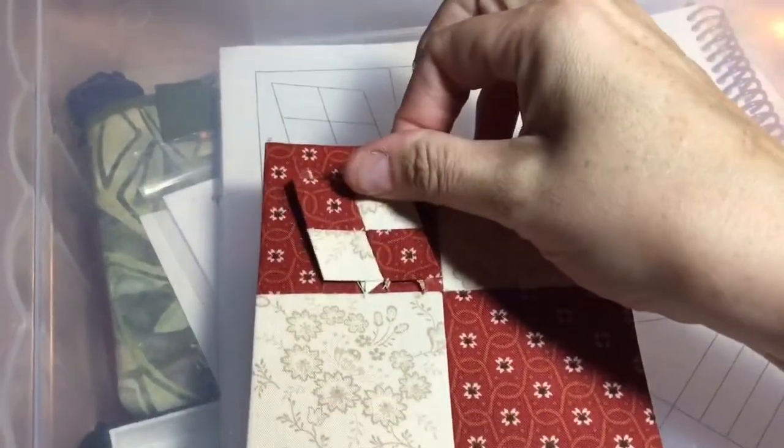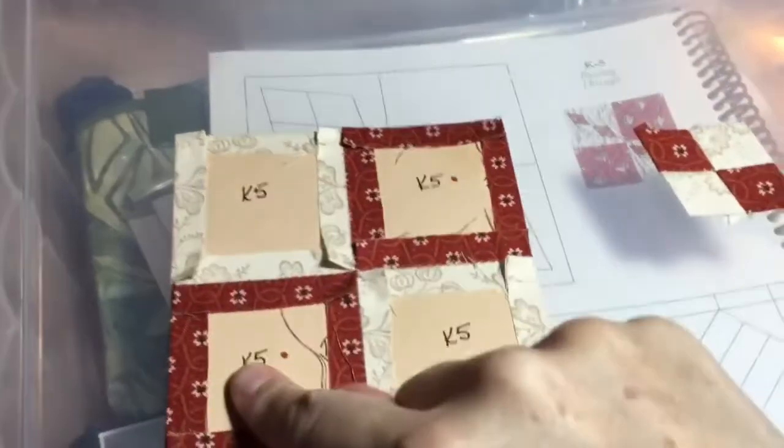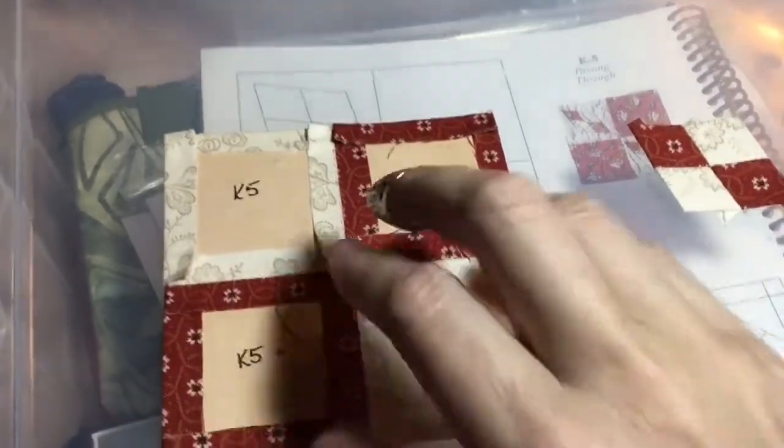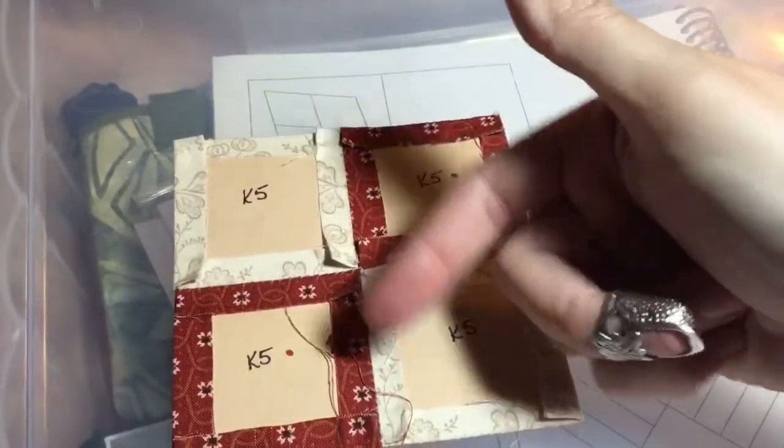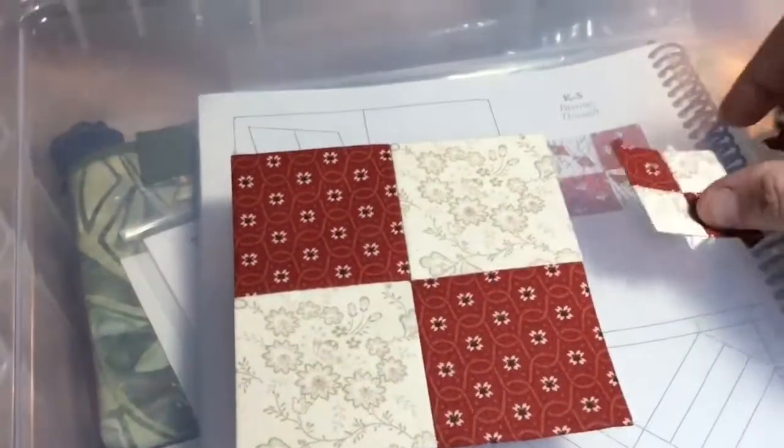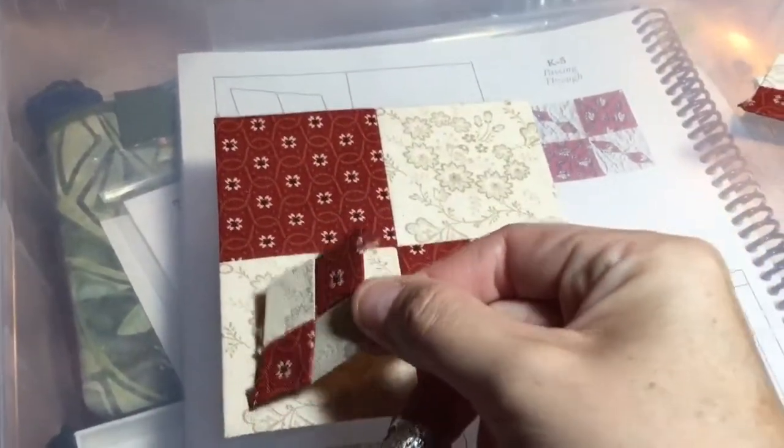They didn't line up because if this was here, then it would have to go this way and it didn't line up with what I did here. When I did my block prep, I planned it based on this configuration. So I actually took this middle seam out and flipped it so it came out to this.